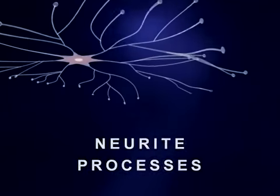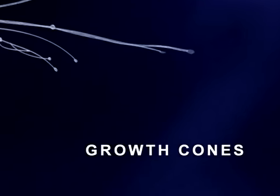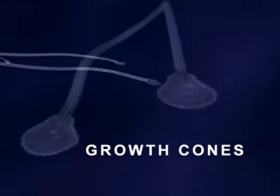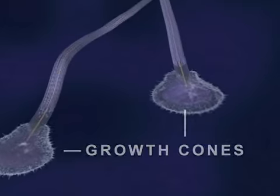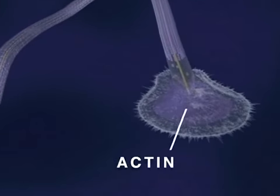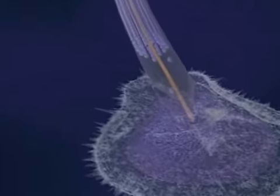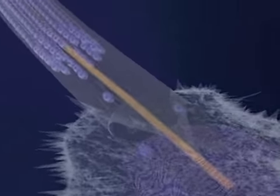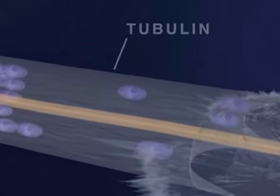At the end of each neurite is a growth cone where structural proteins are assembled to form the cell membrane. Two principal proteins involved in growth cone function are actin, which is responsible for the pulsating motion seen here, and tubulin, a major structural component of the neurite membrane.